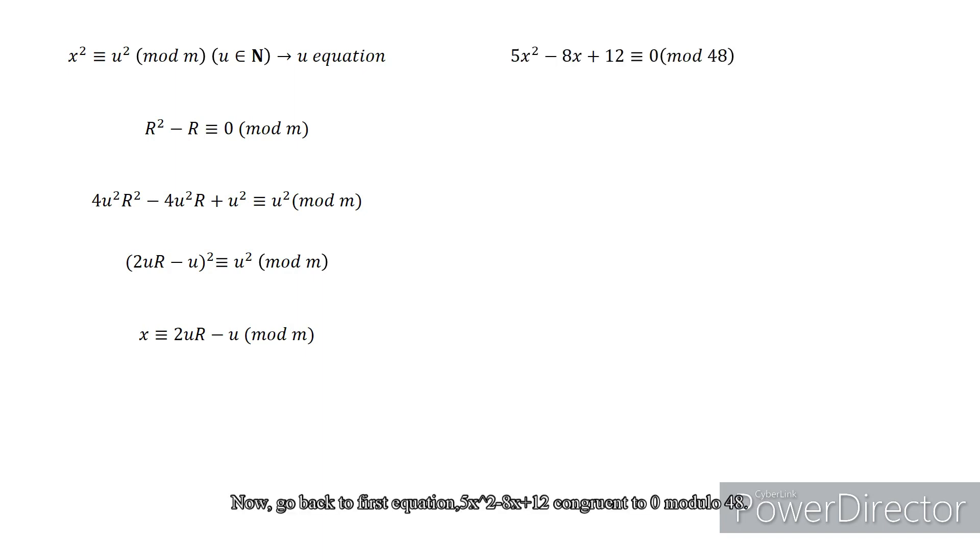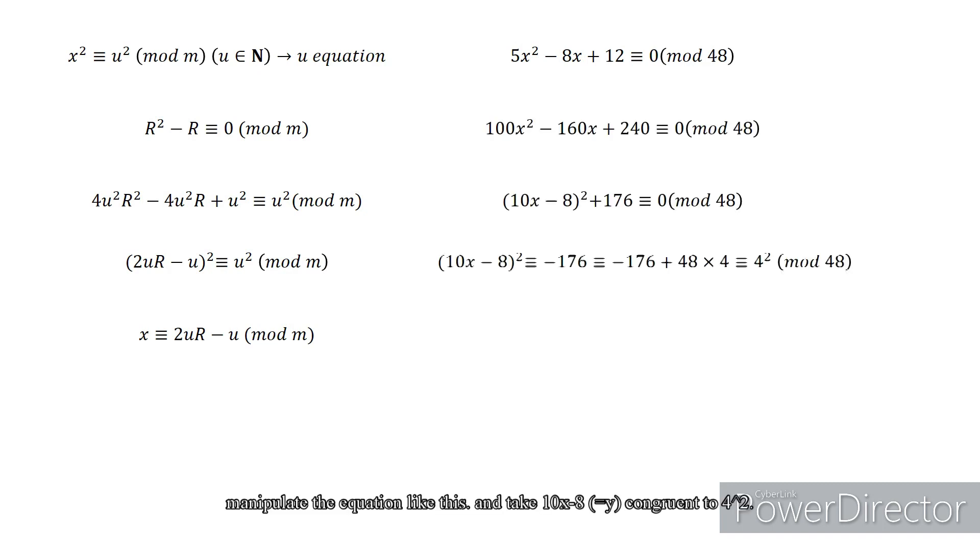Now go back to the first equation: 5x² - 8x + 12 ≡ 0 (mod 48). Manipulate the equation like this, and take 10x - 8 ≡ 4². This is U equation, so y will be 8r - 4.